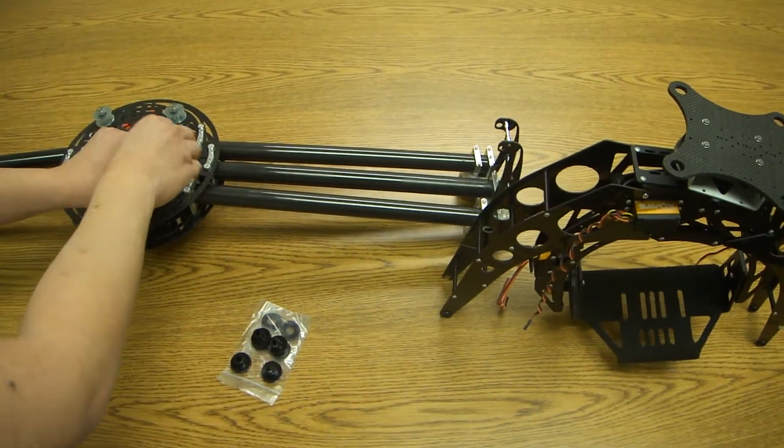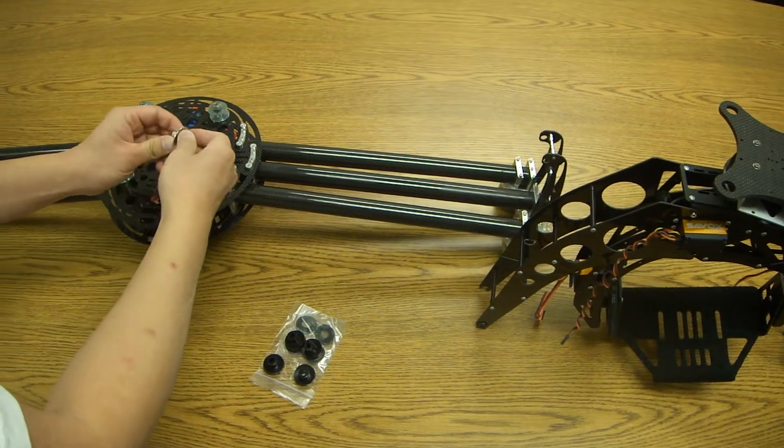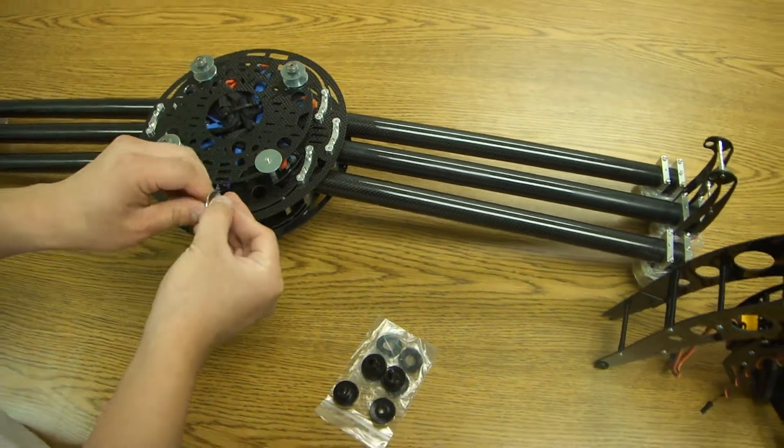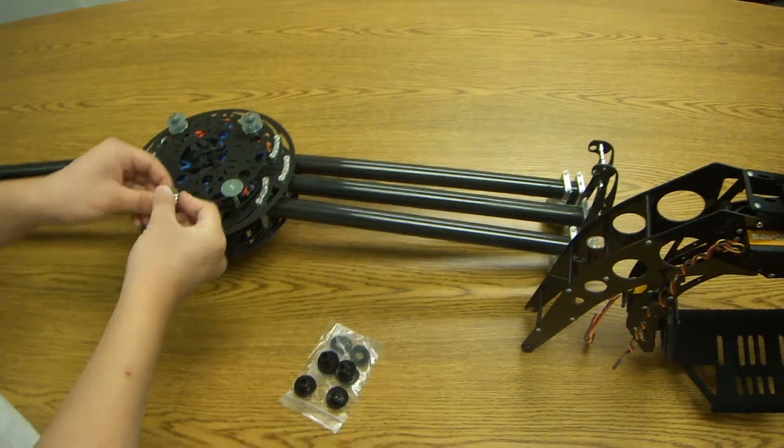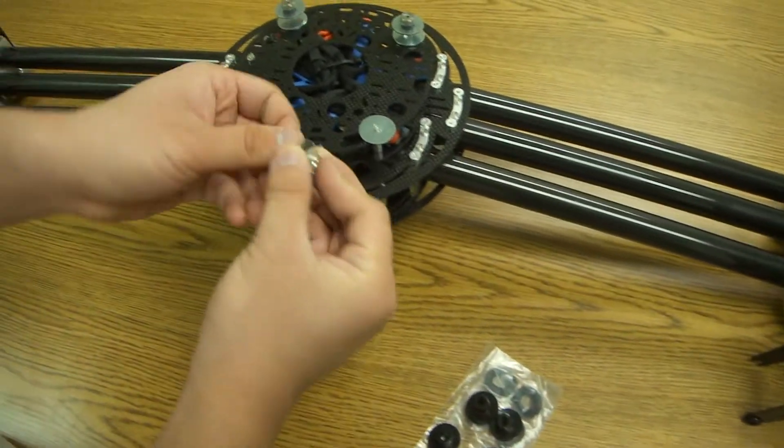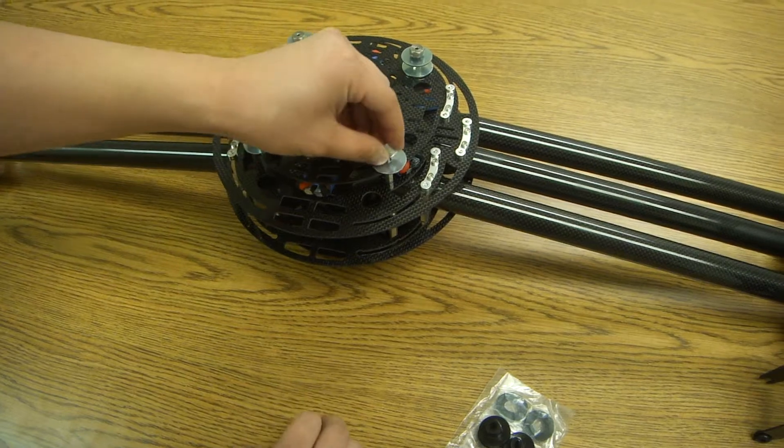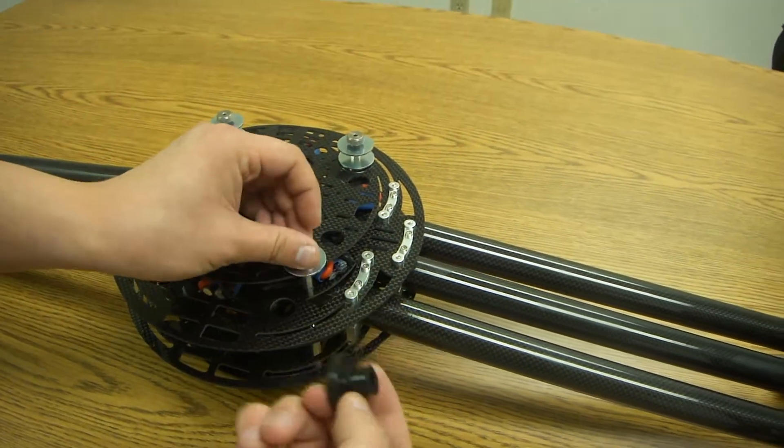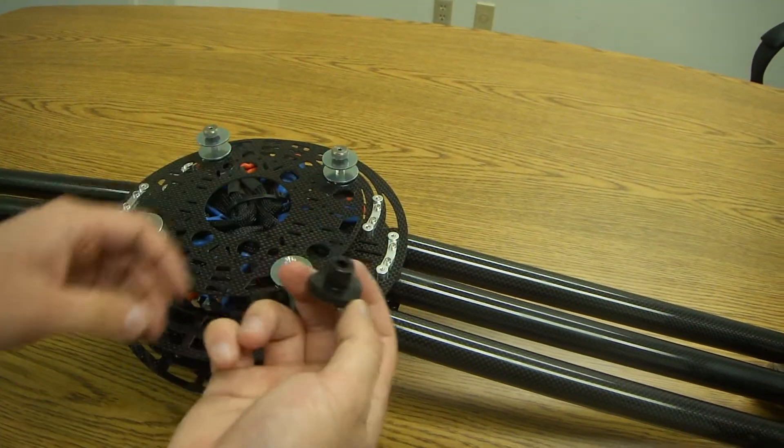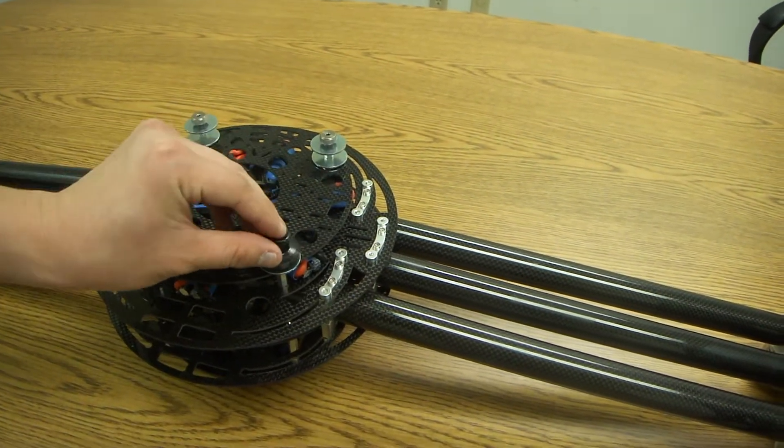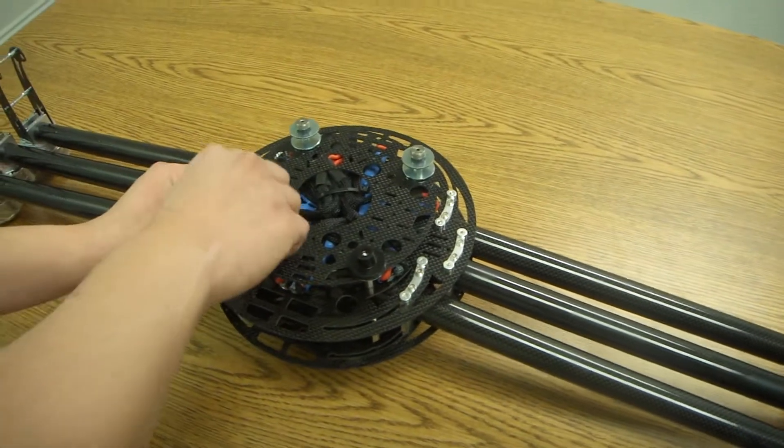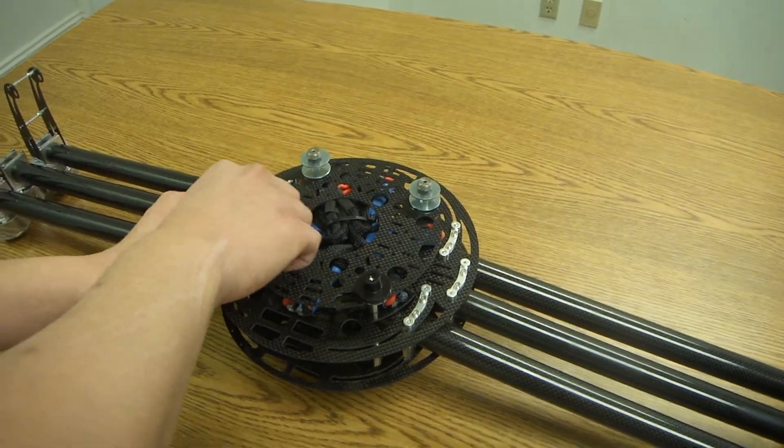So once it's unscrewed, make sure that the post is still on there. So once the post is on there, take your isolated bushing, put one on top, and then remove the next three and repeat the same process.